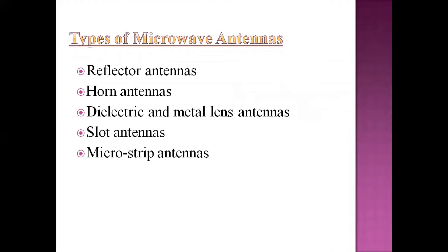Types of microwave antennas: reflector antennas, horn antennas, dielectric and metal lens antennas, slot antennas, and microstrip antennas. So the microwave antenna types are: reflectors, horns, lenses, slot, and microstrips.